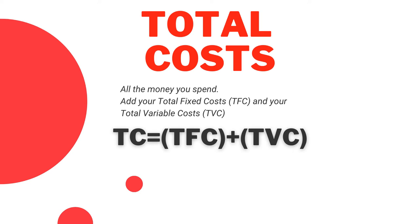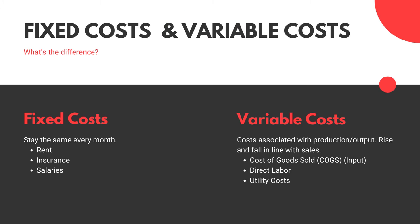On the right side of the equation, total costs — TC in the TR equals TC equation — is just all the money you spend. You add your total fixed costs to your total variable costs. Total costs equals total fixed costs plus total variable costs. You may be asking: what's the difference between fixed and variable costs? Let's get into it.